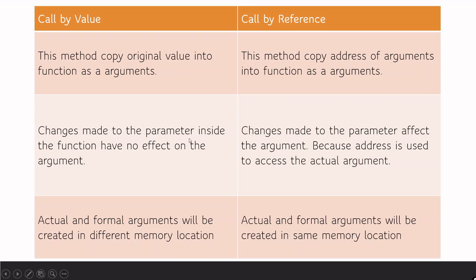Second difference: changes made to the parameter inside the function have no effect on the argument in case of call by value. But in call by reference, changes made to the parameter will affect the actual parameter because the address is used to access the actual argument. Third: actual and formal arguments will be created in different memory locations in case of call by value, but in case of call by reference, actual and formal arguments will be in the same memory location.